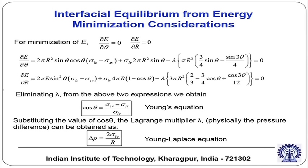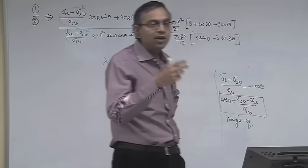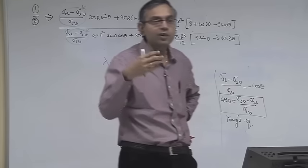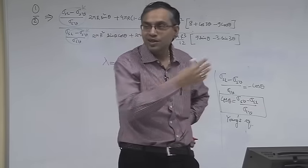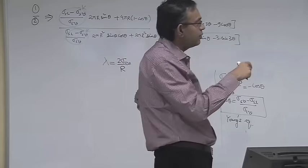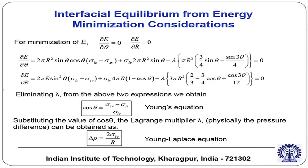To summarize: for minimization of E, setting ∂E/∂θ = 0 and ∂E/∂r = 0 and eliminating lambda gives these two results. In the expression for E, lambda multiplied by volume represents work done, so lambda is physically the pressure difference δp. From the Young-Laplace equation, 2σ_LV/r is indeed δp. Books often say 'by trivial calculation it follows' — but sometimes those trivial calculations can take pages!